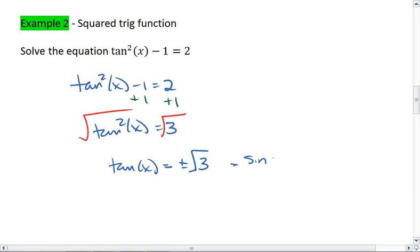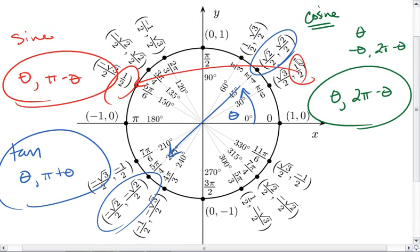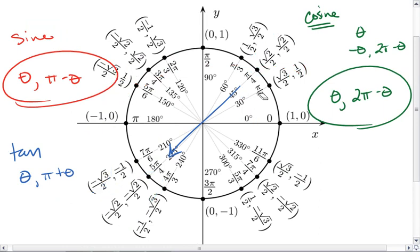And we end up with tan of x equals plus or minus the square root of 3. Now remember, tan is sine over cosine. So we're going to look at our unit circle. And we're going to determine where sine over cosine would be root 3. And that's going to happen, nope, not that one. That would be cosine over sine. Here we go. Up at pi thirds, and then also at 4 pi thirds.